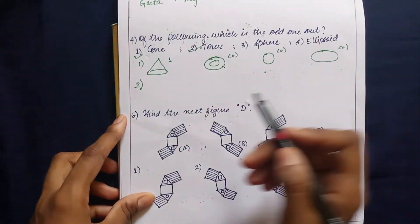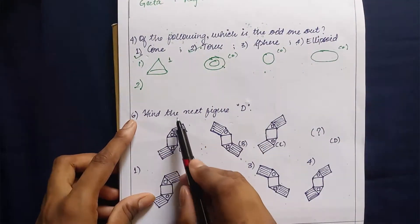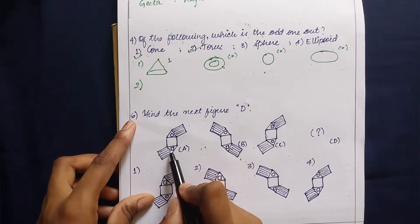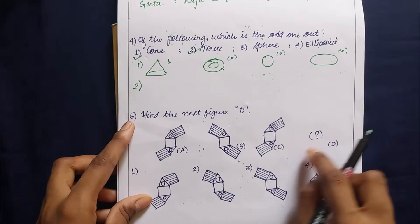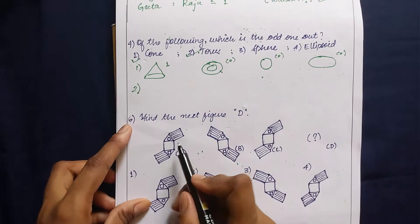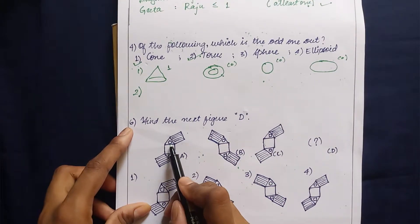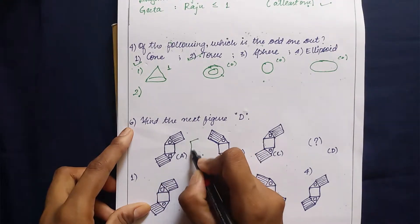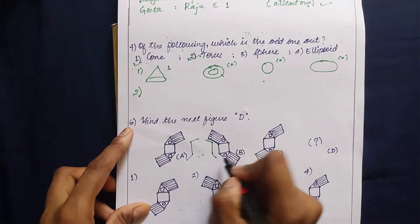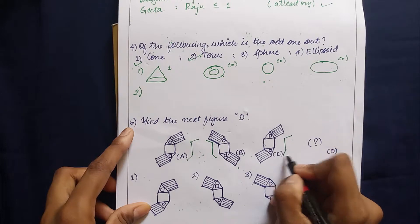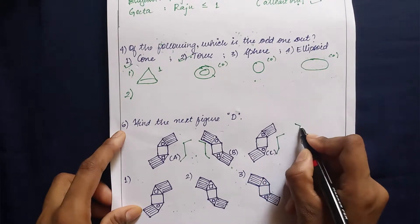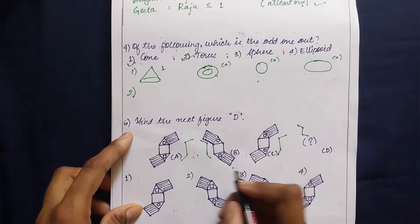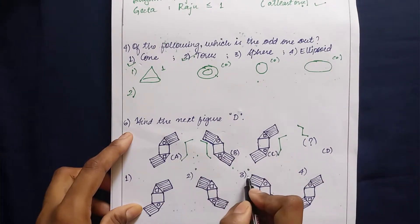Moving on to the sixth question: find the next figure. This is a simple question. Considering these diagrams, we need to find what comes next in the pattern. Starting with the nature of the shape — the shape is oriented in one direction, then the other direction, then again in the first direction. So the next one will obviously be facing in the second direction. Of the options, only option two or option three could be the most suitable.